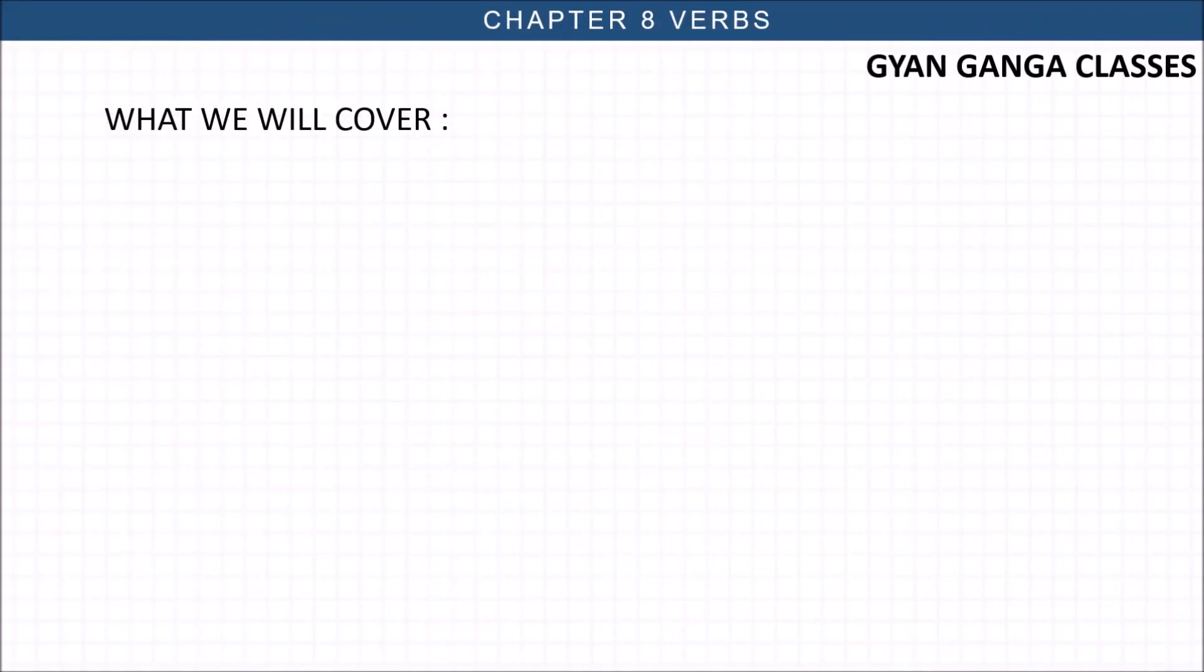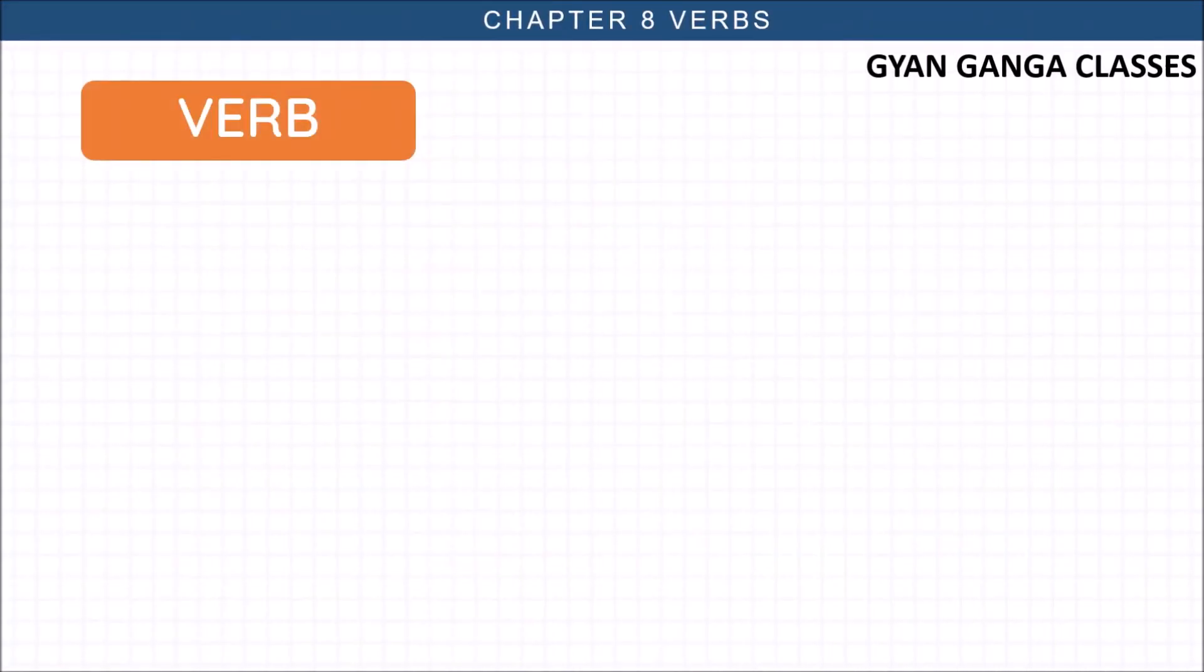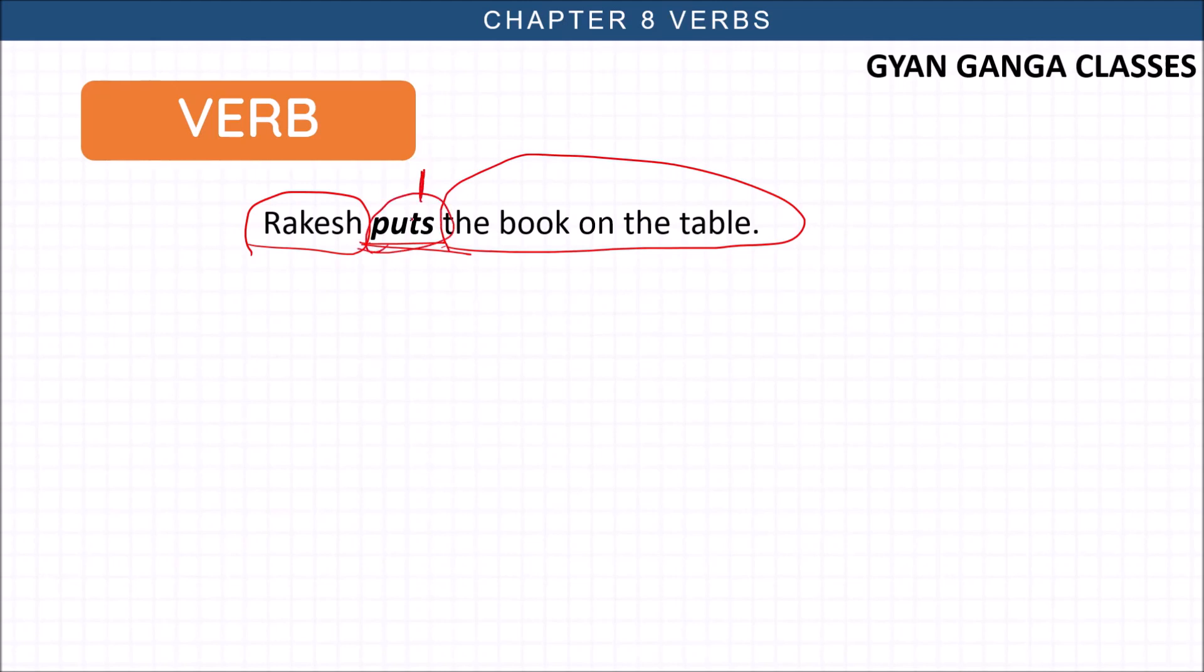Let's start with the verb. We have a sentence: Rakesh puts the book on the table. Here, puts - Rakesh is doing something. He is putting the book on table. So this word puts is the verb, doing some action. Then there is a teacher who teaches the students in the classroom. Teach is again the action word or we can say it is a verb.